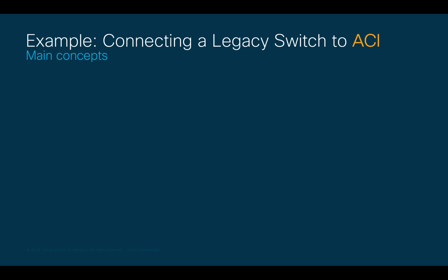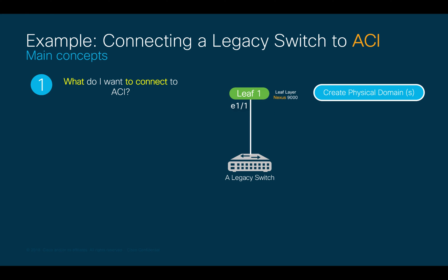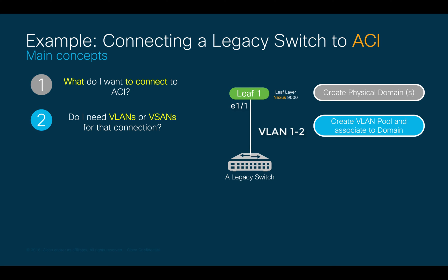Let's take a look at another example to make sure we understood the basic concepts. Let's imagine we want to connect a legacy switch to leaf 1 on port 1.1. In step 1, I define the type of connection I want, which in this case is a physical domain since it is a non-ACI switch. In step 2, we define the VLANs that will flow through port 1.1 in a VLAN pool, for example VLAN 1 and VLAN 2, and then I will associate it to the physical domain.